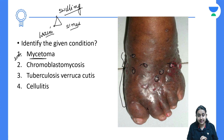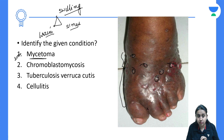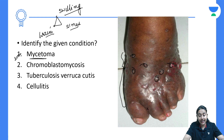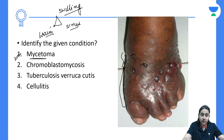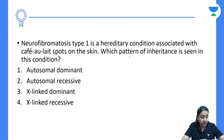There are two types of mycetoma: a fungal mycetoma known as eumycetoma and a bacterial mycetoma known as actinomycetoma. If the colour of the crystals or grains is black, it is eumycetoma; if it is yellow, it is actinomycetoma.